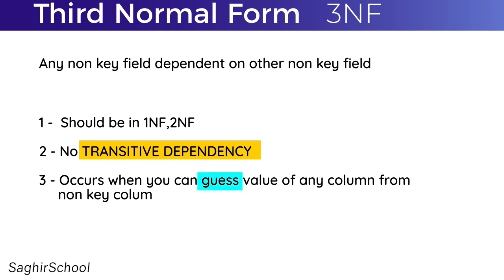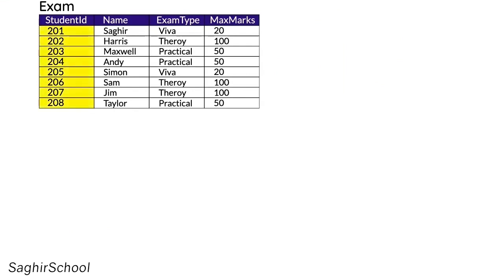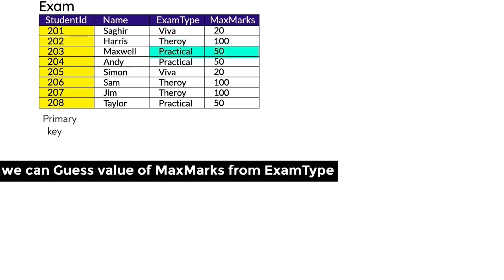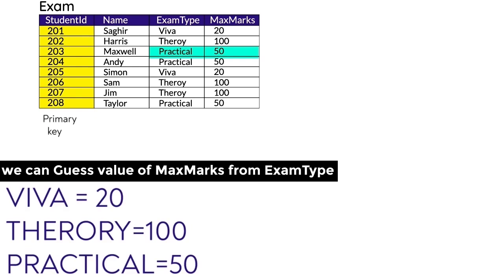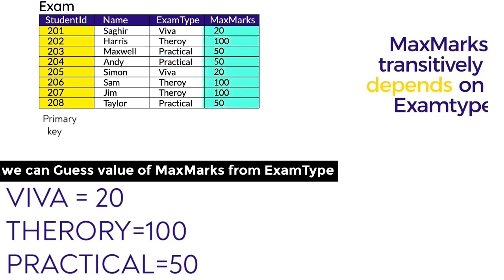Transitive dependency occurs when one non-key column can be guessed from another non-key column, violating Third Normal Form. In this student table, Student ID is the primary key and Name, Exam Type, and Maximum Marks are non-key columns. From the data we can see: Viva has 20 marks, Theory has 100 marks, and Practical has 50 marks. Maximum Marks can be guessed from Exam Type, meaning Maximum Marks transitively depends on Exam Type.